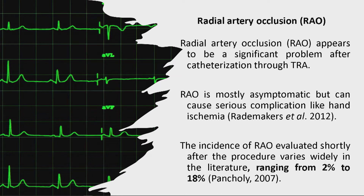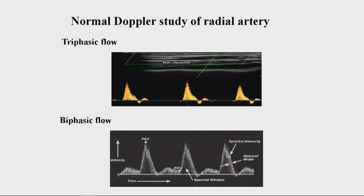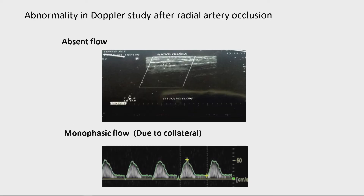Radial artery occlusion is very important — the incidence is 2% to 18% in different literature. It may be asymptomatic but can cause serious complications like hand ischemia. Radial artery occlusion can be documented by post-procedural ultrasound Doppler. Presence of a radial artery pulse does not rule out occlusion because collateral flow may produce the pulse. This is the triphasic or biphasic flow, and this is absent or monophasic flow from the collaterals.